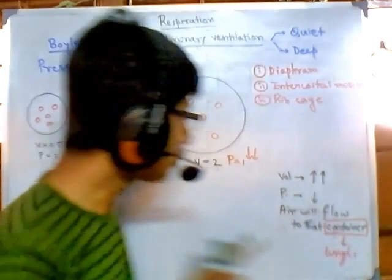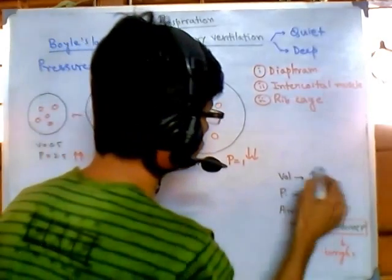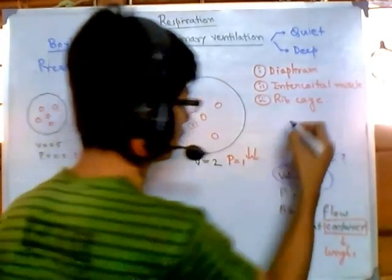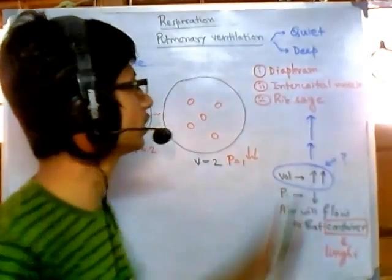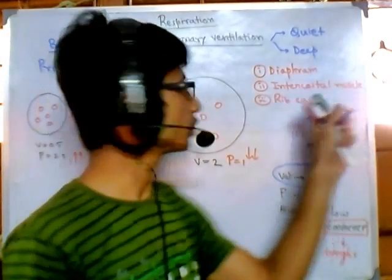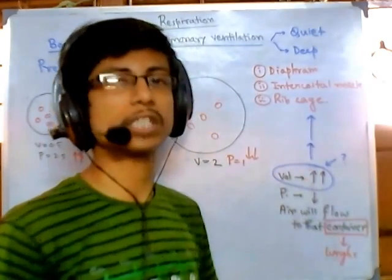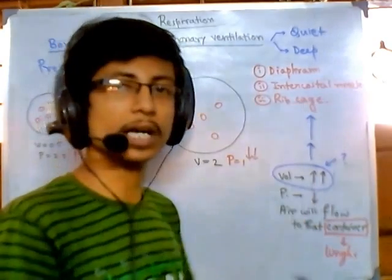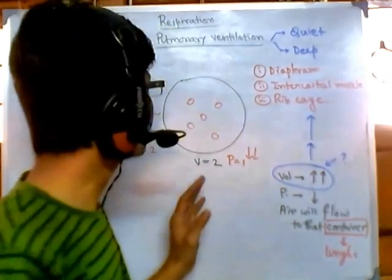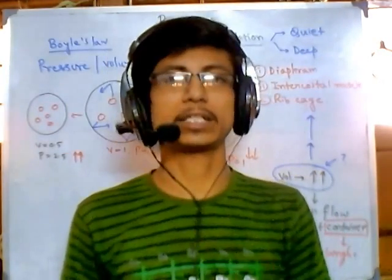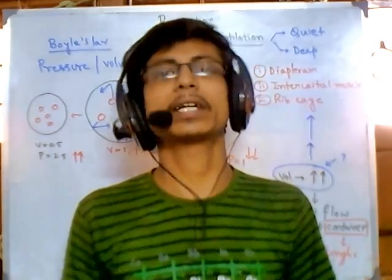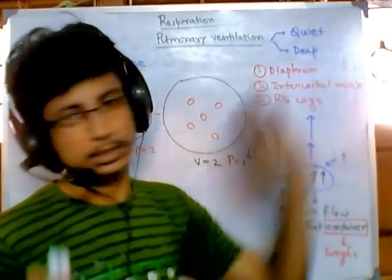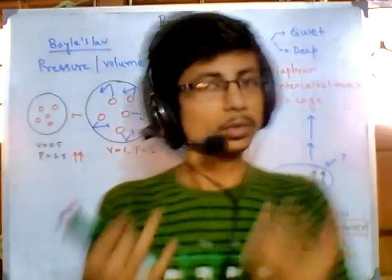But how do we increase this volume? That's the major part, because it's the first thing that must occur for breathing. The increment of volume is achieved by the three important things I mentioned: diaphragm, intercostal muscles, and ribcage — all working together to increase the volume of your chest cavity. As they increase the volume, pressure falls, air flows in, and that's breathing. Future videos will cover the details of how volume is increased in quiet and deep breathing.